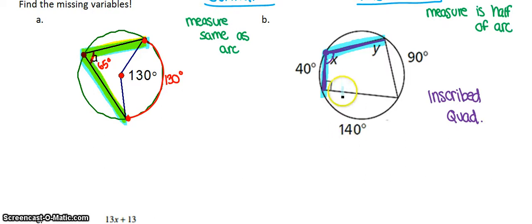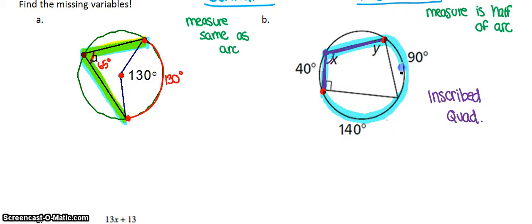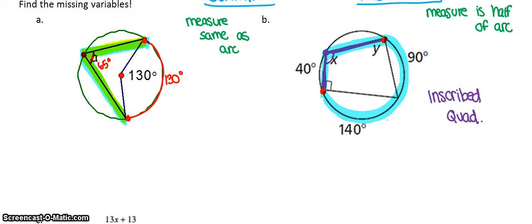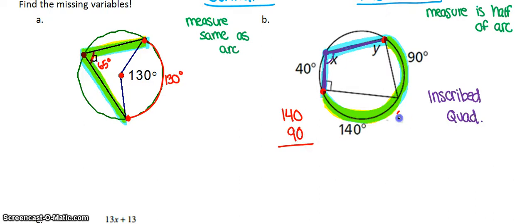An inscribed angle is half the measure of its intercepted arc. For angle X, the endpoints are on two rays, and the intercepted arc is across from it — like the crust of a pizza slice. The green intercepted arc is made of two pieces: 140 + 90 = 230°. So angle X = 230 ÷ 2 = 115°.